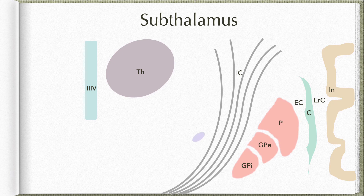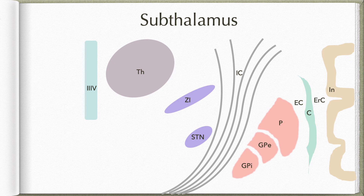In this subthalamic region we can see the subthalamic nucleus, which is considered part of the basal ganglia and will be discussed in more detail when we cover the basal ganglia. We also have the zona inserta, another neuronal group that has connections with the sensorimotor cortex, trigeminal nuclei, spinal cord, and globus pallidus, though its functions are not yet well understood. This is one of the neuronal collections within the subthalamic region.